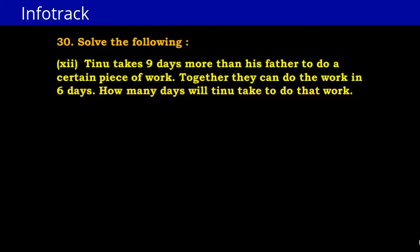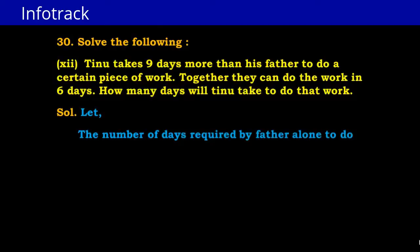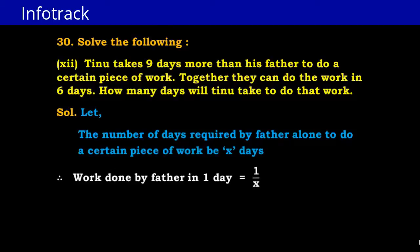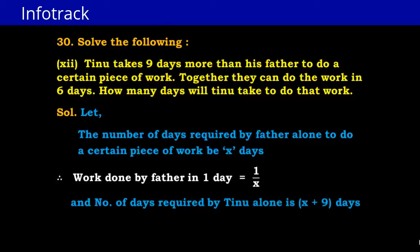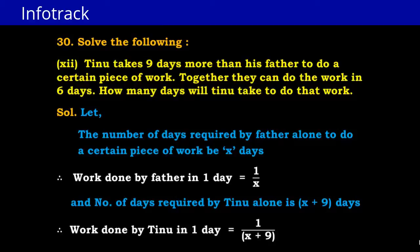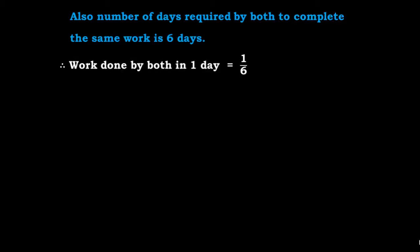Tinu takes 9 days more than his father to do a certain piece of work. Together they can do the work in 6 days. How many days will Tinu take to do that work? Let the number of days required for the father alone to do the work be X. Work done by father in 1 day is 1/X. Tinu takes 9 days more, so the days required by Tinu alone is X + 9. Work done by Tinu in 1 day is 1/(X + 9). Together they complete the work in 6 days, so work done by both in 1 day is 1/6.